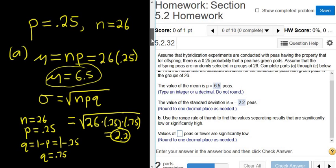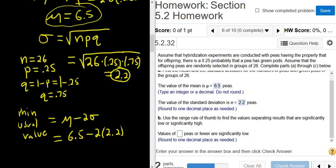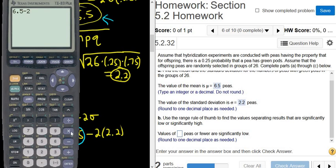Use the range rule of thumb to find the values separating results that are significantly low or significantly high. Values of blank peas or fewer are significantly low. So we have to find the minimum usual value. So the minimum usual value, that's going to be mu minus 2 sigma. So that's 6.5 minus 2 times 2.2. So I'm going to put this in the calculator. So 6.5 minus 2 times 2.2, so 2.1, 2.1.